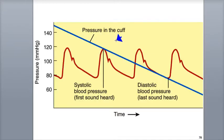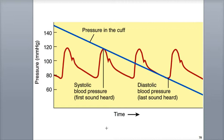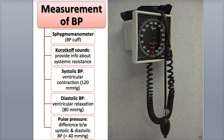The first sound represents the systolic blood pressure in the arteries immediately following contraction of the ventricle. The cuff is then further deflated, and the sounds eventually become too quiet to hear through the stethoscope. The last sounds heard through the stethoscope correspond to the diastolic blood pressure, which is the pressure generated by blood remaining in the arteries while the ventricle is relaxed.